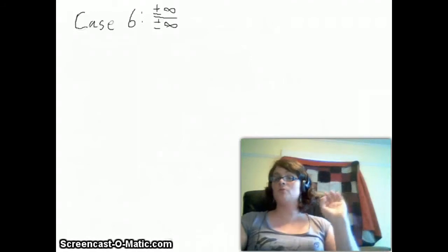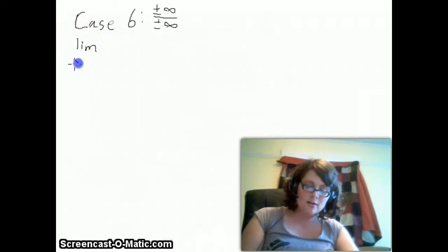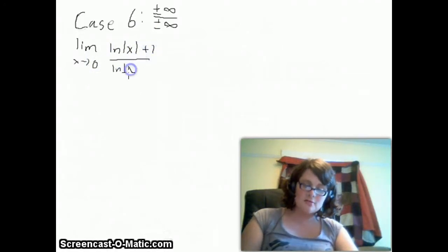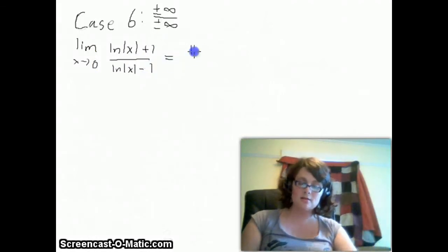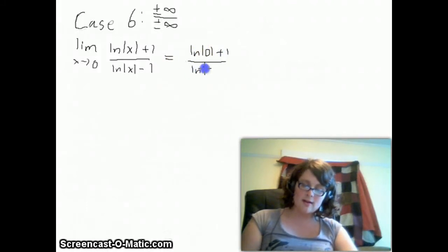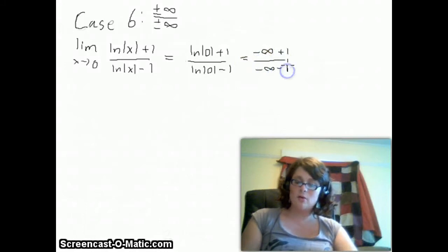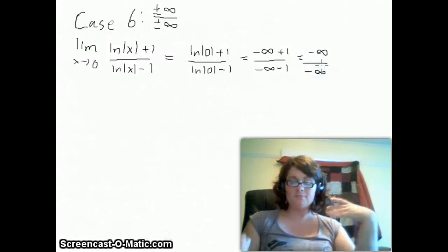I'm going to give you an example of a situation which is a little bit more complicated than that. The example is the limit as x goes to 0 of the natural logarithm of the absolute value of x plus 1, over ln of the absolute value of x minus 1. The first thing we're going to do is plug in 0 for x. So we get ln of |0+1| over ln of |0−1|. ln of 0 is minus infinity, so we have minus infinity plus 1 over minus infinity minus 1. Adding 1 and subtracting 1 from minus infinity doesn't change anything, so we have minus infinity over minus infinity.